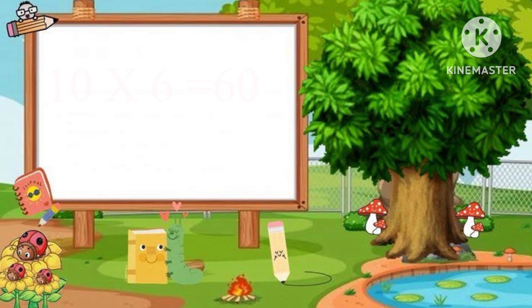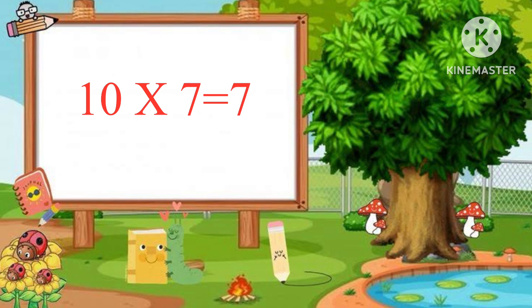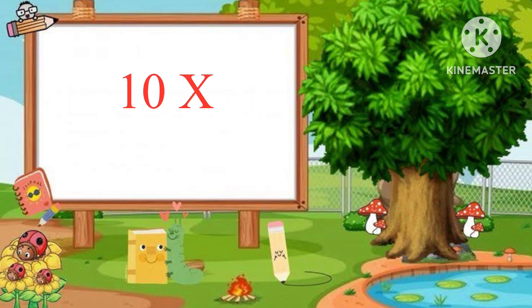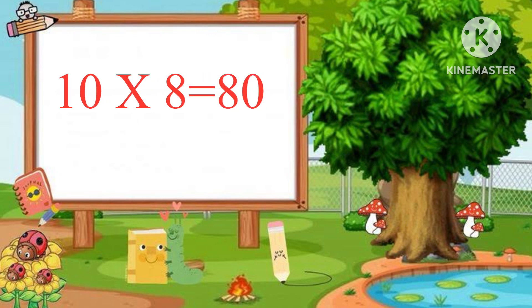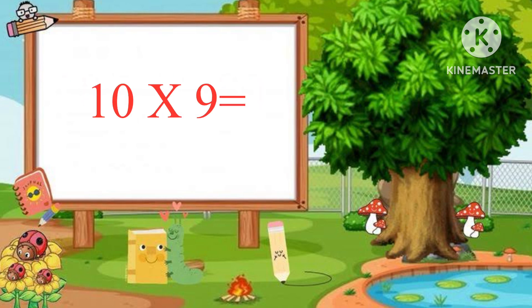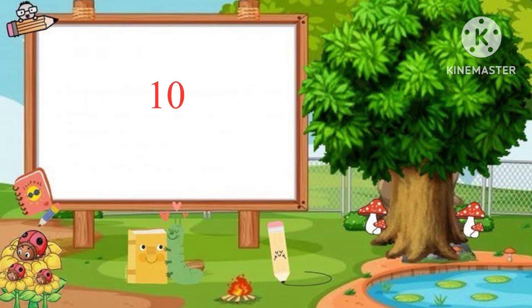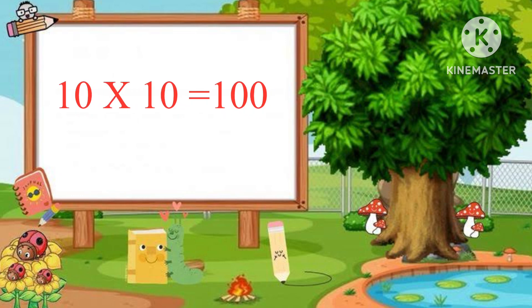Ten sevens are seventy. Ten eights are eighty. Ten nines are ninety. Ten tens are one hundred.